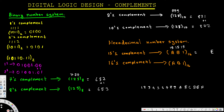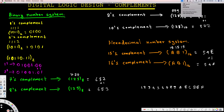Continuing: fifteen minus B — B is eleven, so fifteen minus eleven is four. Fifteen minus A — A is ten, so fifteen minus ten is five. So five-four-E is the fifteenth complement. For the sixteenth complement, we add one to the last digit: E plus one is F, giving us five-four-F as the sixteenth complement.